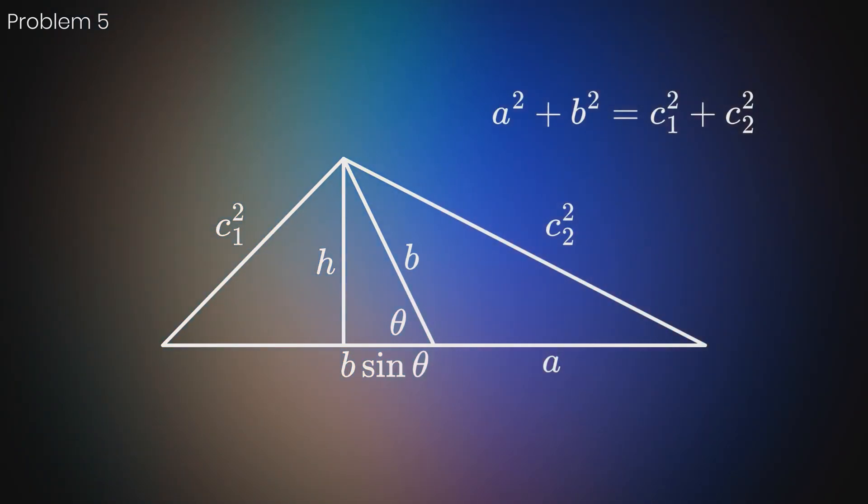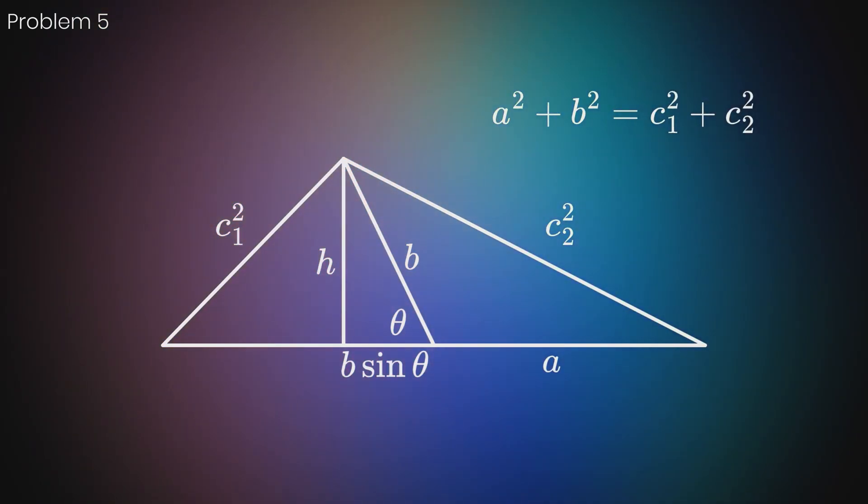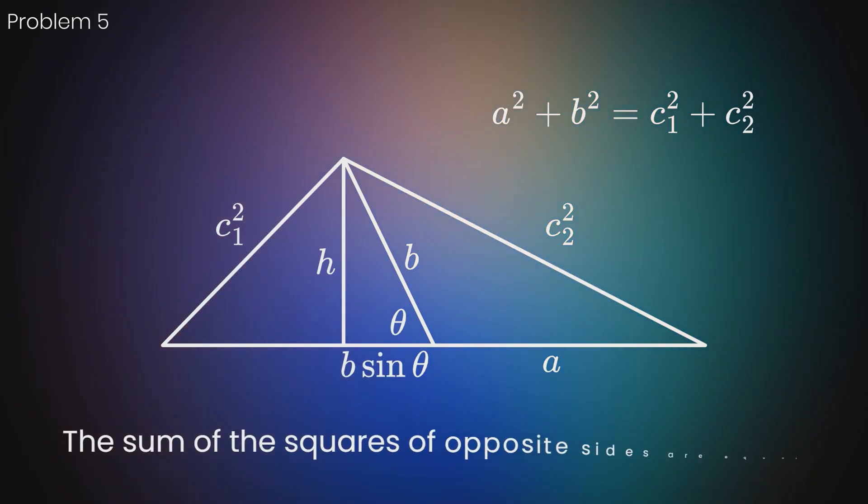Since the other pair of triangles must follow the same principle, we can deduce that the sum of the squares of opposite sides must be equal. 63 squared plus 16 squared must equal BC squared plus 56 squared. And solving for BC, we get the answer as 33.